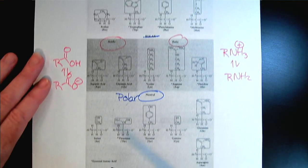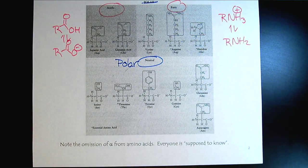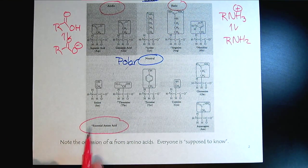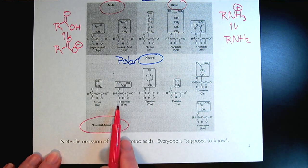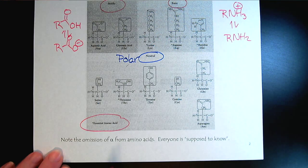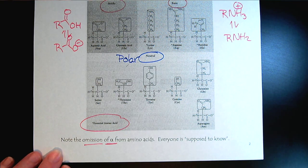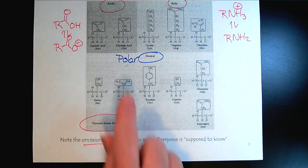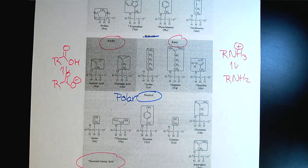One last thing: on the previous page I mentioned essential amino acids. Looking at this list, the essential amino acids are all indicated by a star, if you're curious. A lot of books make a big deal about them being alpha amino acids, but then a couple pages into the chapter it gets omitted because everyone's supposed to know it. Don't let that presence or absence of 'alpha' fool you — if we're talking about biochemistry, we're talking about alpha amino acids.